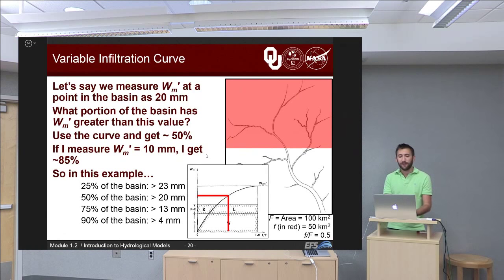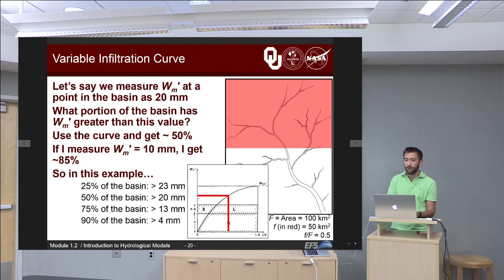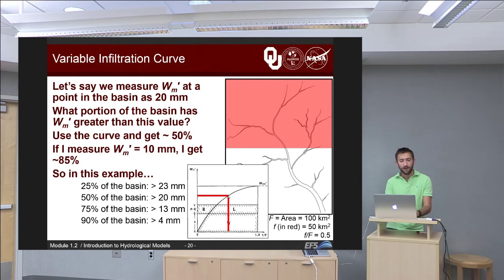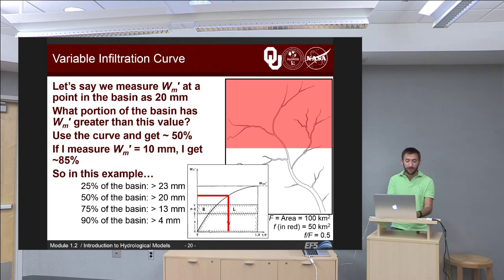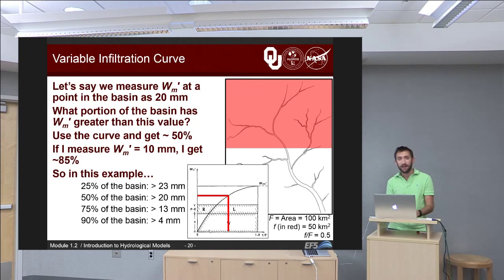From a spatial perspective, if we measure Wm prime at a point in a basin as 20 mm — and Wmax prime is 25 mm — we follow the horizontal red line on the figure straight out until we reach the curve. Which portion of the basin has a Wm prime greater than that value? Going straight down from that point on the curve, we get about 50% — halfway between 0 and 1. If Wm prime were 10 mm instead, about 85% of the basin has a storage capacity greater than 10 mm. All of these results are governed by the shape of the curve.